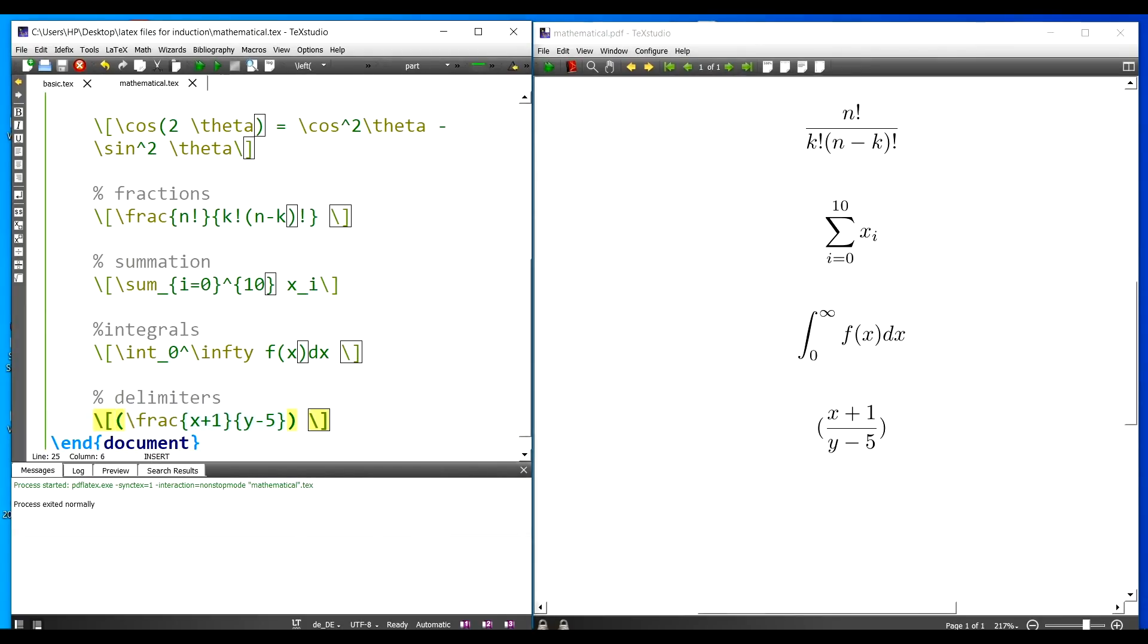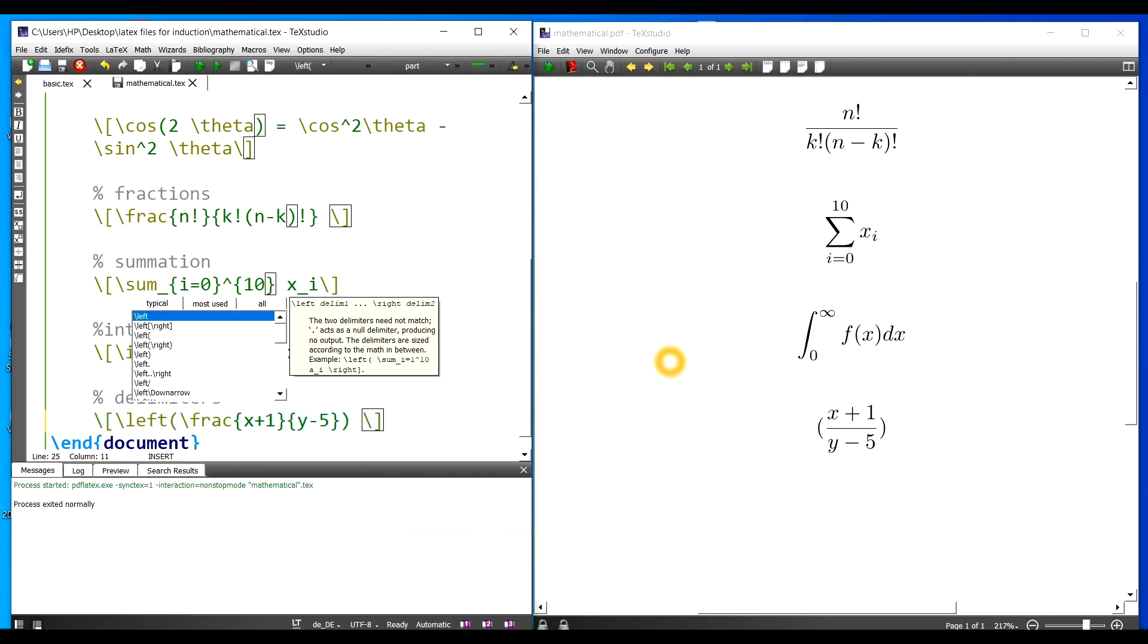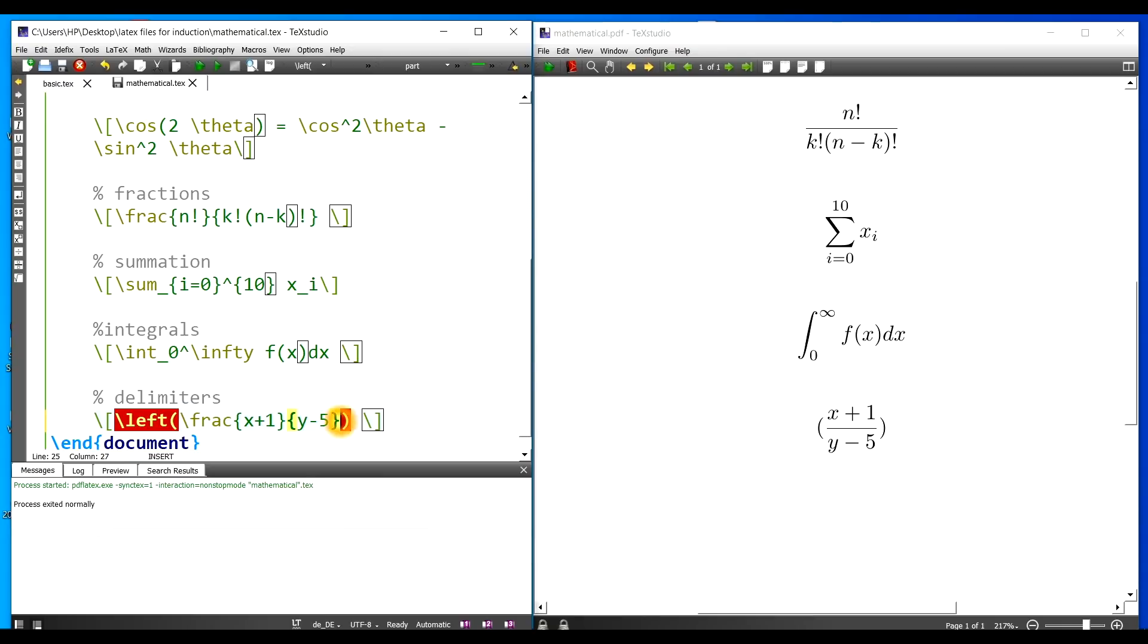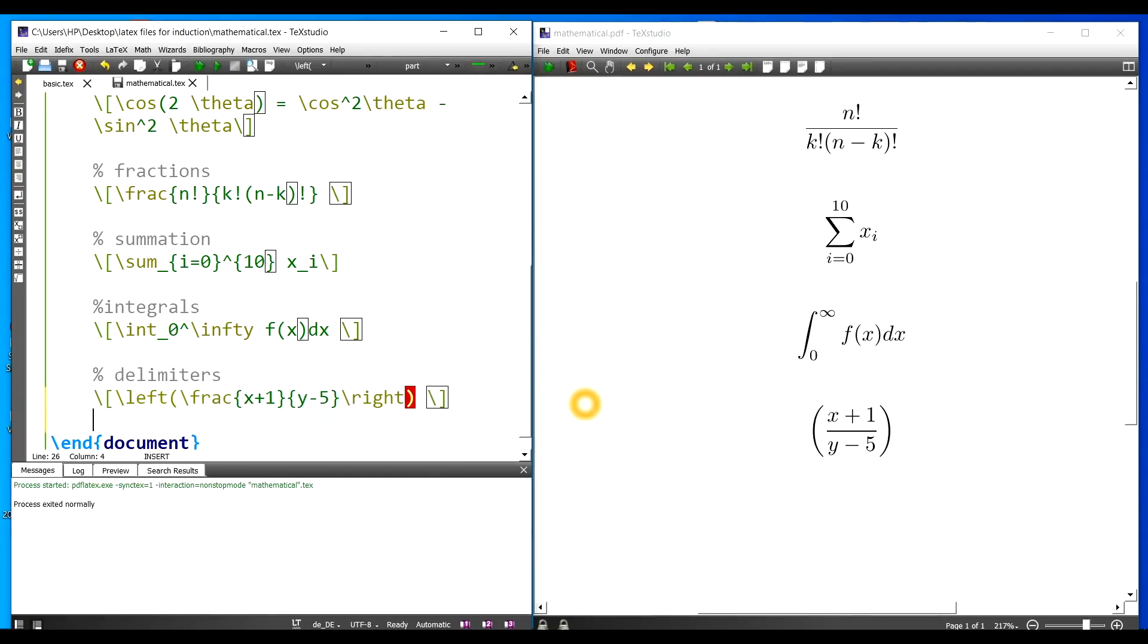For that I need to resize my brackets. That is resizing the delimiters. For the left bracket I write slash left, and whatever delimiter I need. Similarly for the right I will be writing slash right and the delimiter which I need. Now if I execute, now you can see the proper delimiter. The proper brackets have come up. Now in case there is a delimiter only on one side, then an imaginary delimiter has to be added on the other side. That can be done using a period.